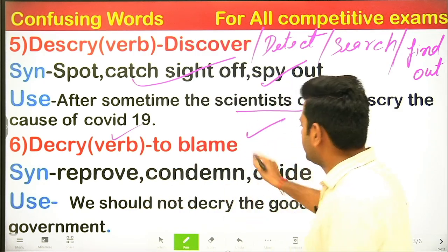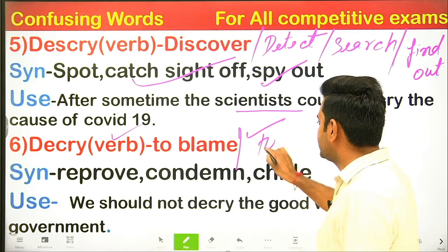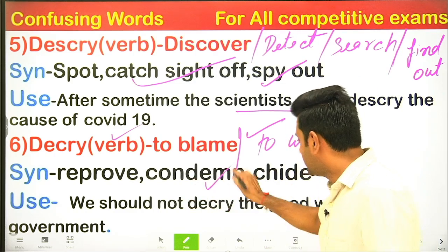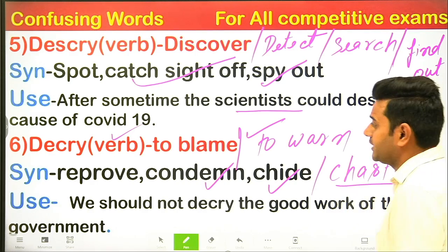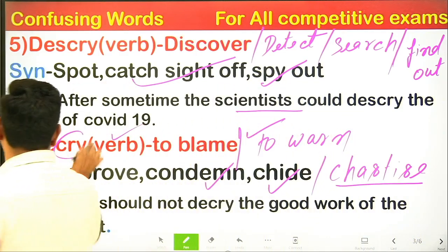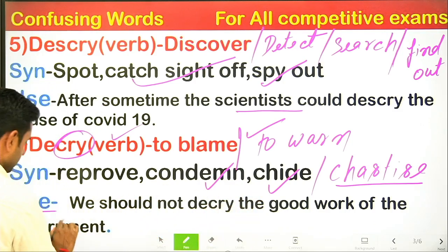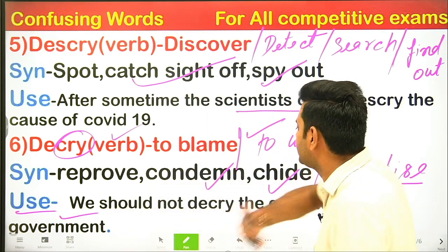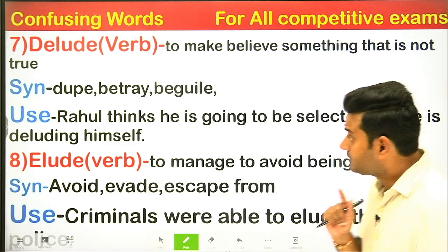Now 'decry' means to blame someone, to criticize someone. Synonyms: blame, criticize, warn, reprove, condemn, chide, chastise. Decry means to criticize someone, to speak ill of someone. Example: 'We should not decry the good work of the government.' Meaning: We should not criticize or blame the good work done by the government.